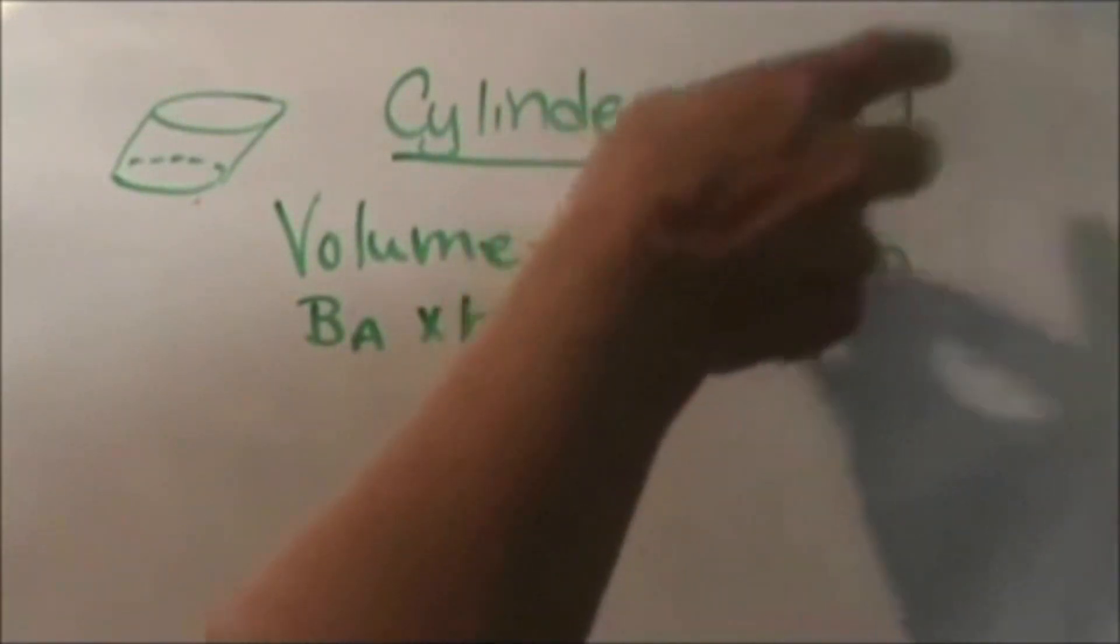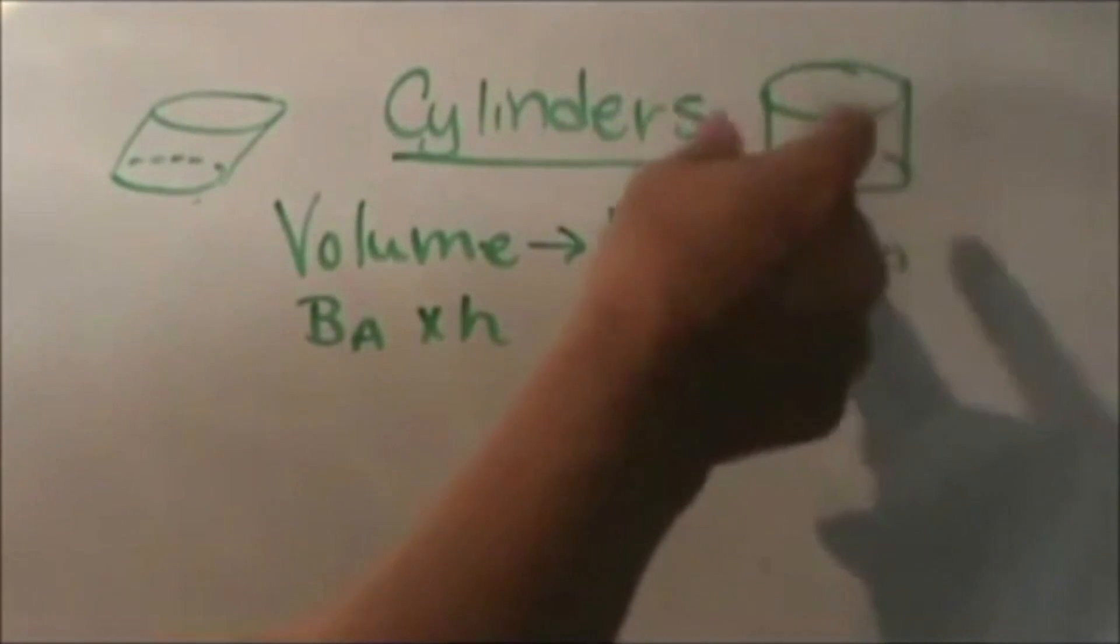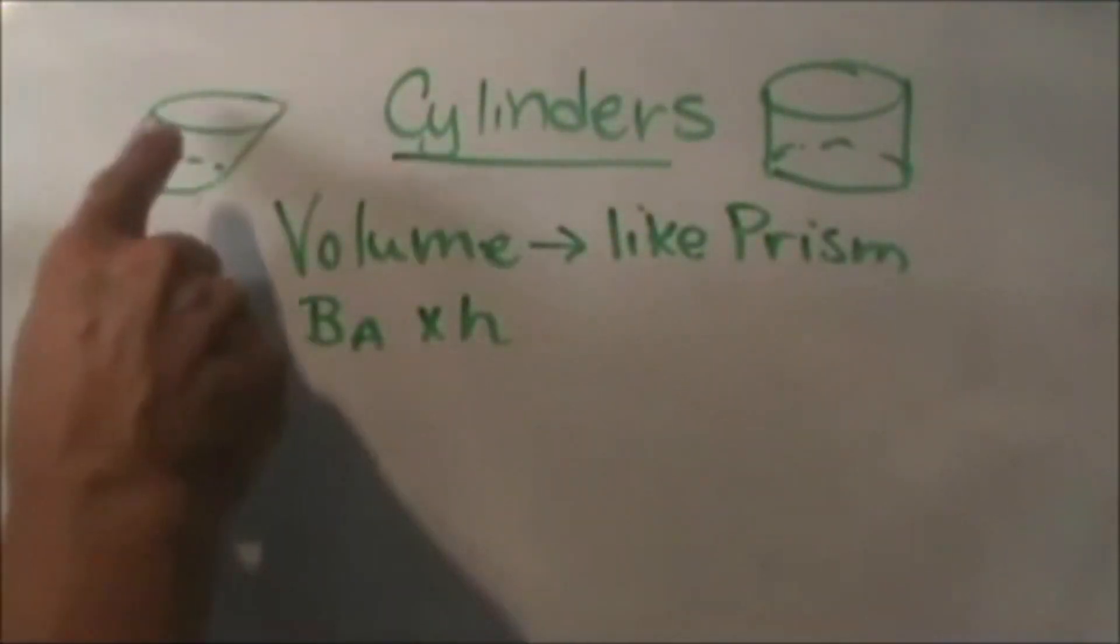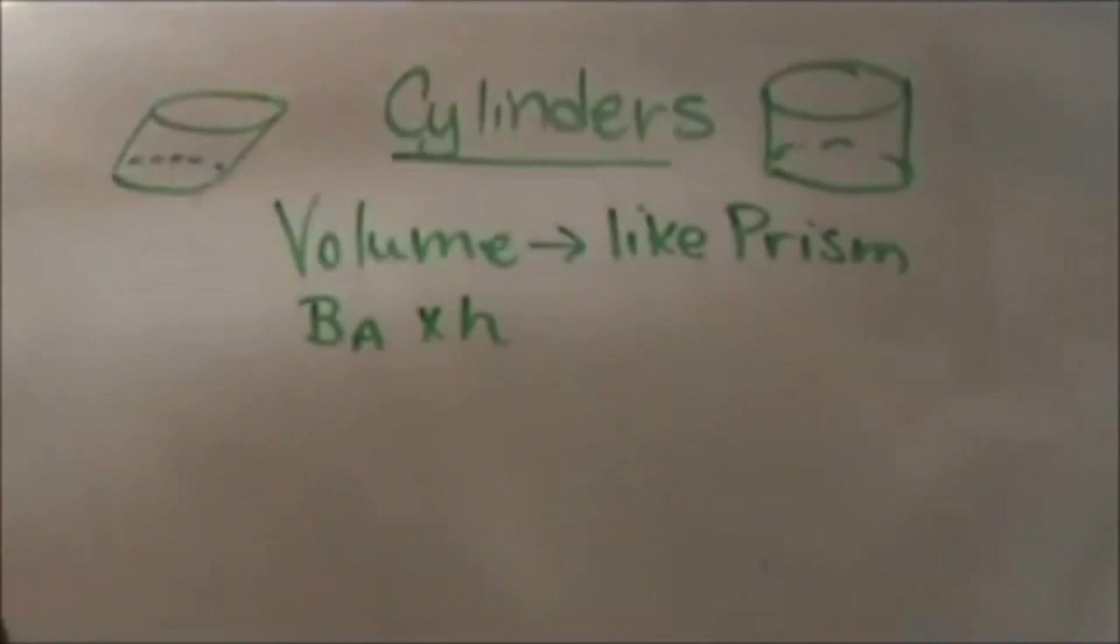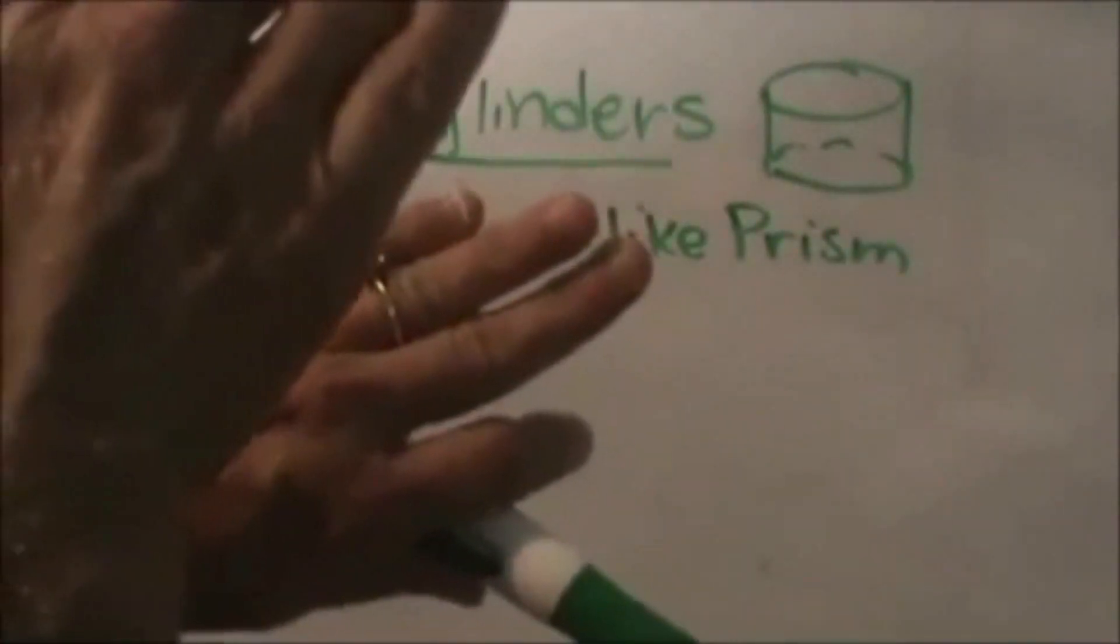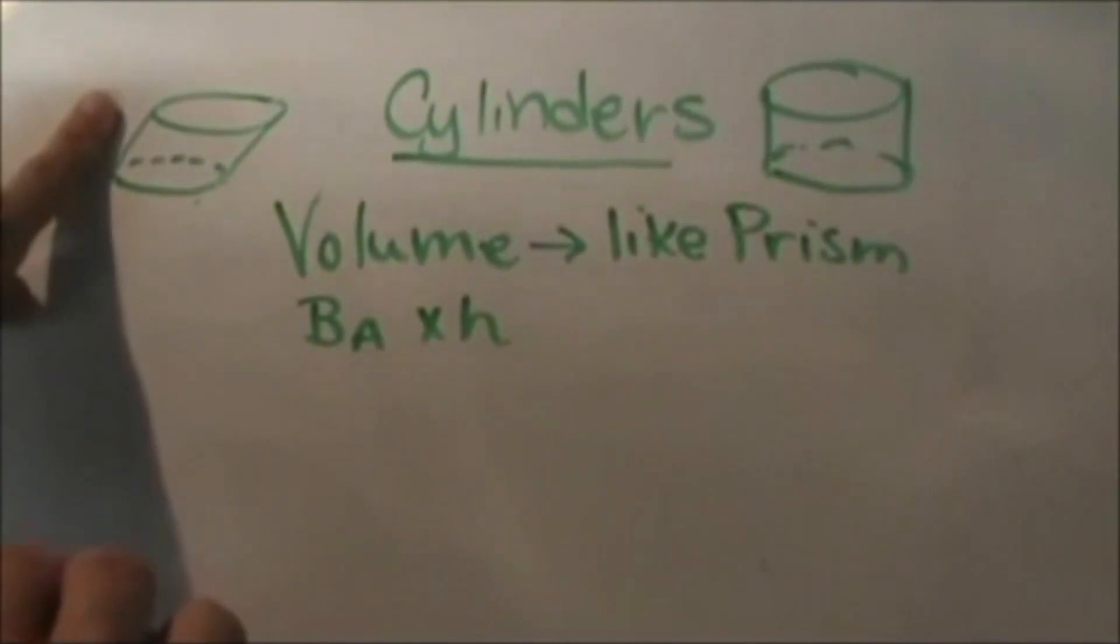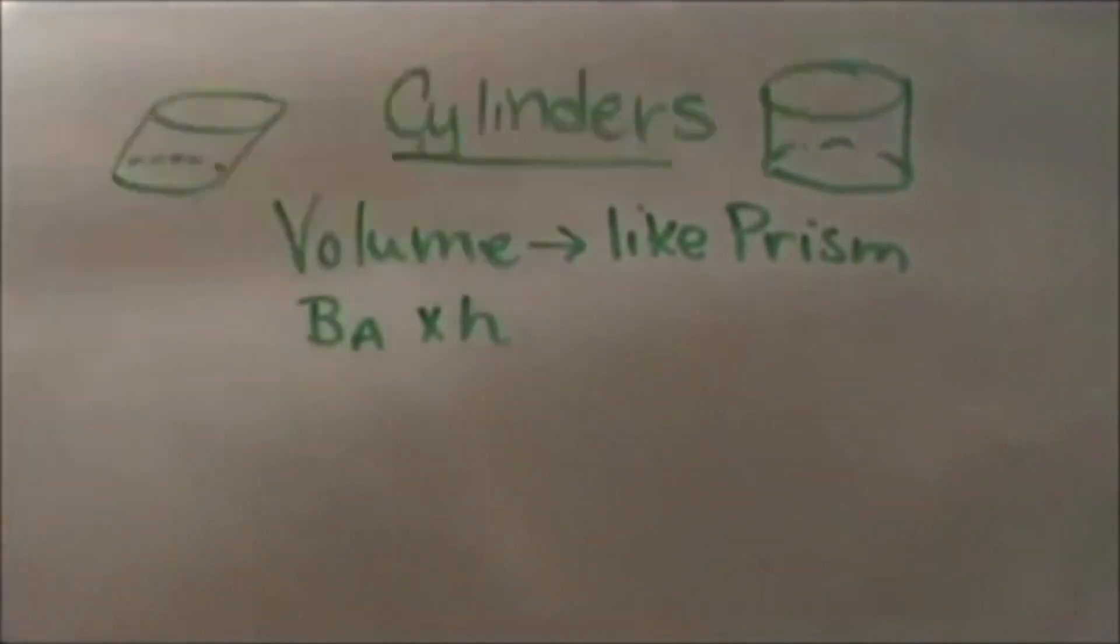This one is straight up and down, and then we have another one where the bases are parallel to each other but they don't stand one on top of the other. They are offset and we call this an oblique cylinder. You would find the volume the exact same way.